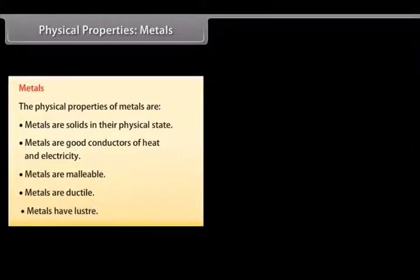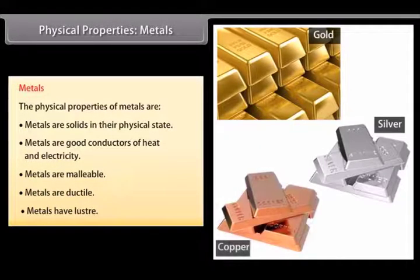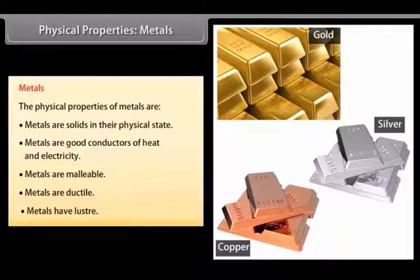Lustre. Metals reflect light from their shiny surface. They can also be polished. For example, gold, silver and copper are metals with a shiny surface and can be polished.